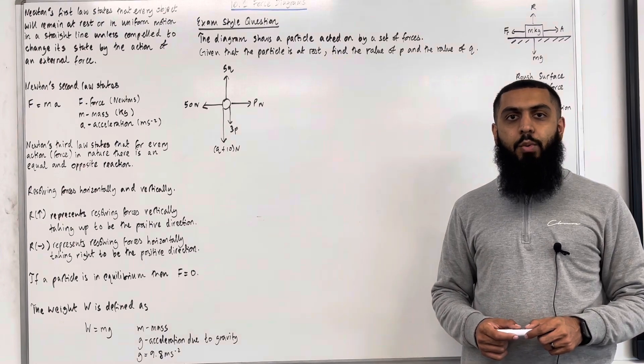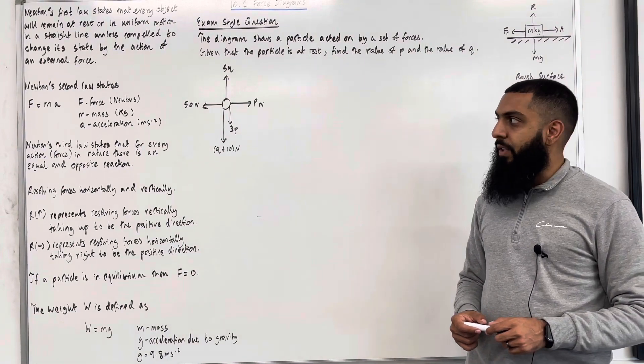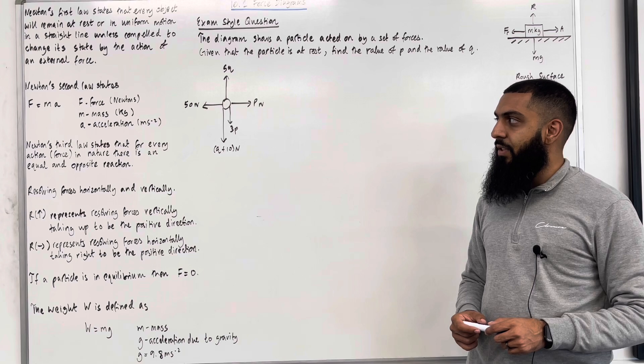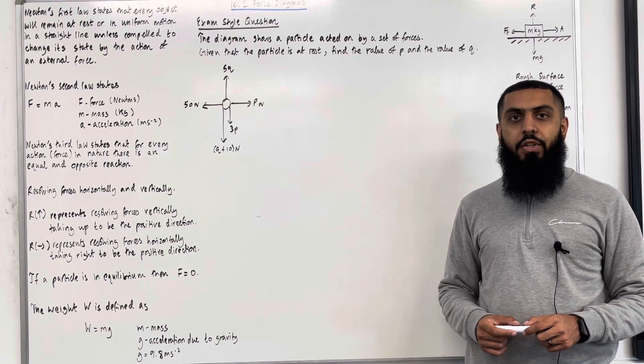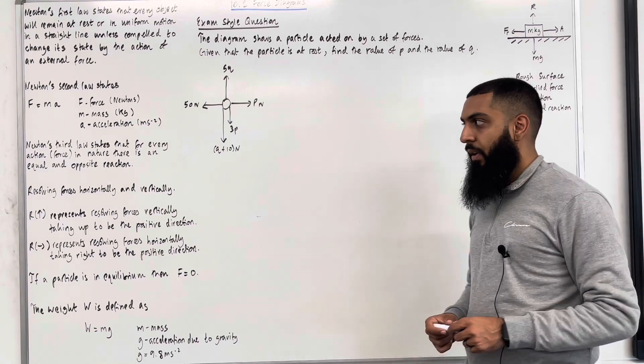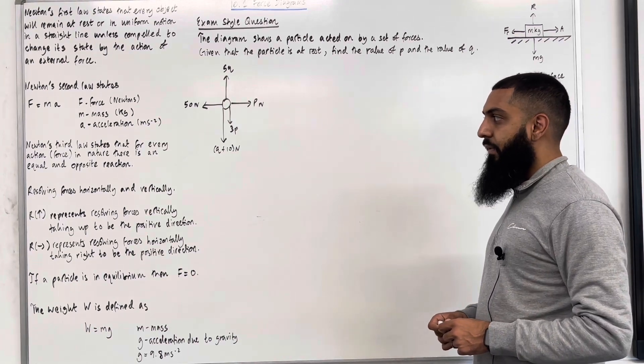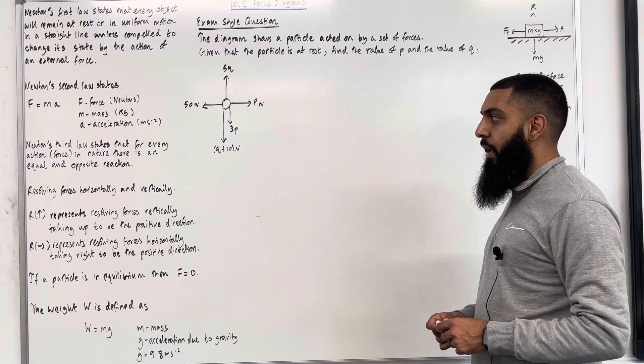Newton's second law states that F equals Ma. F represents the resultant force measured in newtons, M represents the mass measured in kilograms, A represents the acceleration measured in meters per second per second. Newton's third law states that for every action in nature, there's an equal and opposite reaction.